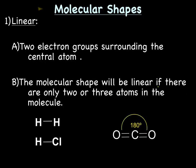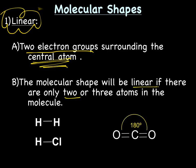Let's discuss molecular shapes. There are five of them we'll be talking about, and how to determine them by counting the number of electron groups around the central atom. The first shape is linear. Linear shape occurs when there are two electron groups surrounding the central atom. So the molecular shape will be linear if there are only two or three atoms in the molecule. These two shapes on the right are linear. In this case, there really is no central atom. But they look like a straight line, linear.